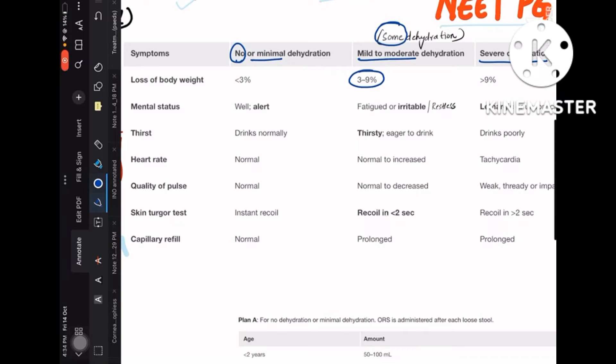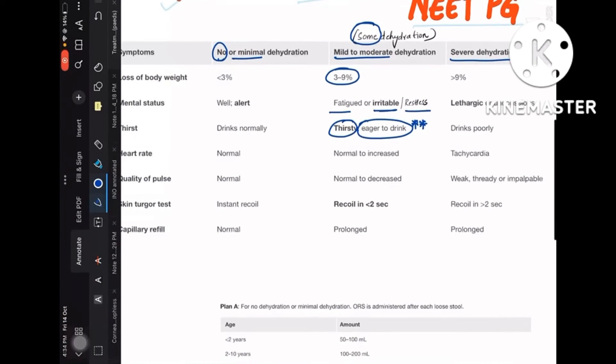They usually ask you about moderate dehydration only, because it has some clincher words like the patient, the kid, is irritable, restless, fatigued, and he is thirsty and he is able to drink. He is eager to drink. He drinks water when you provide him fluids; he will take it eagerly. But when you see severe dehydration, they drink poorly. So this will be the differentiation feature between these two.